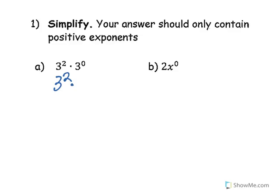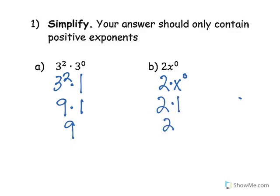Problem A: I have three squared and something to the zero power. Anything to the zero power is one, so my answer is nine times one, which is nine. Next, two times x to the zero — x to the zero is one, so two times one is two.